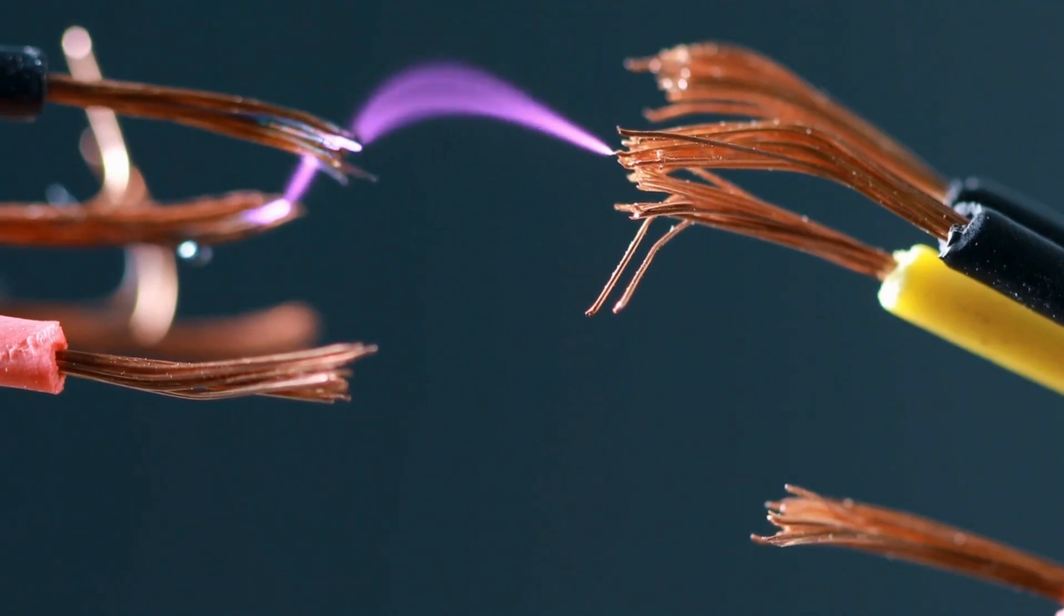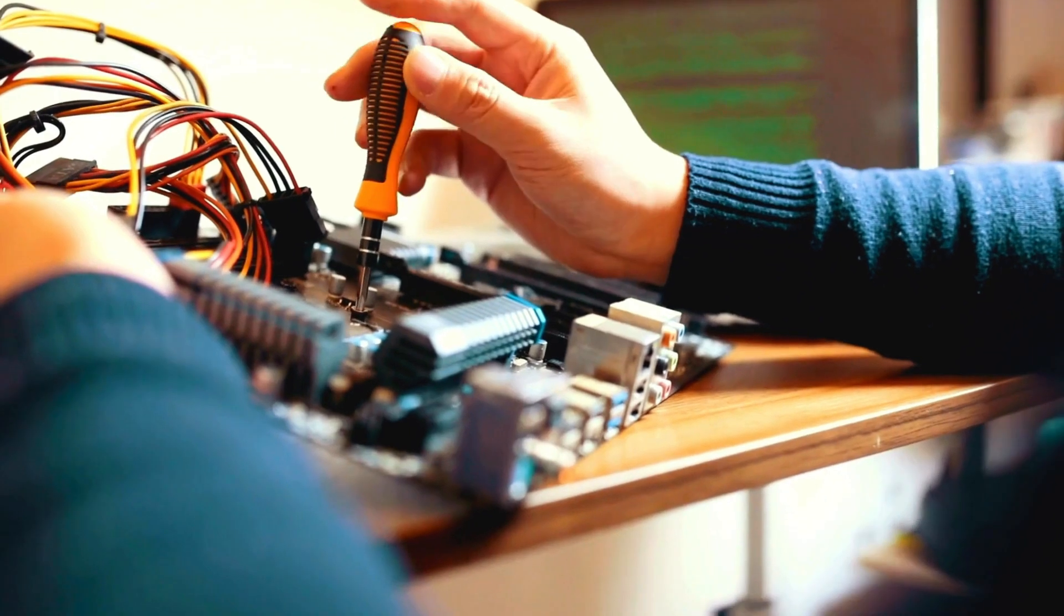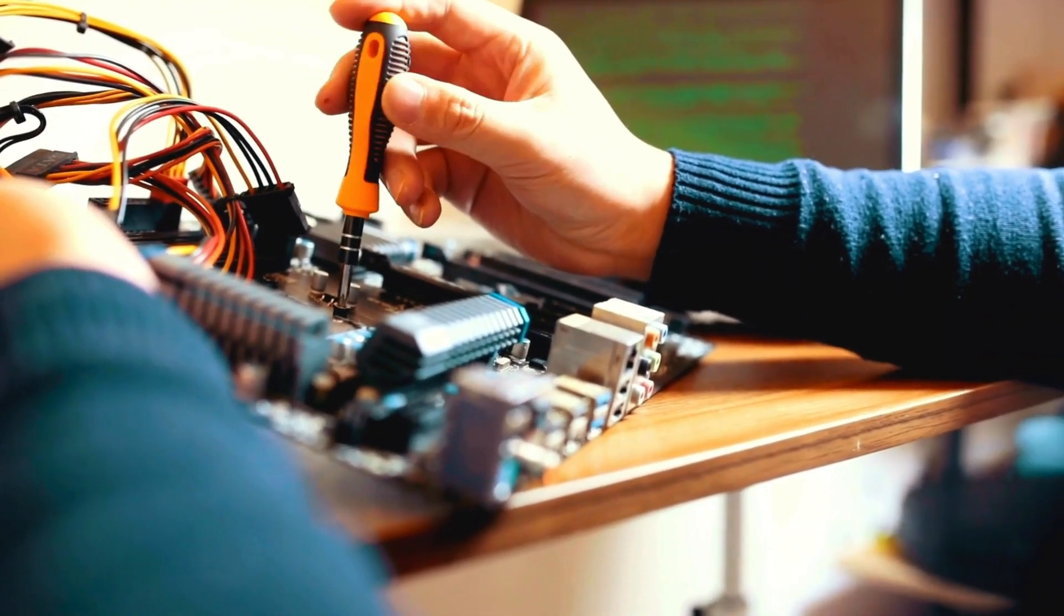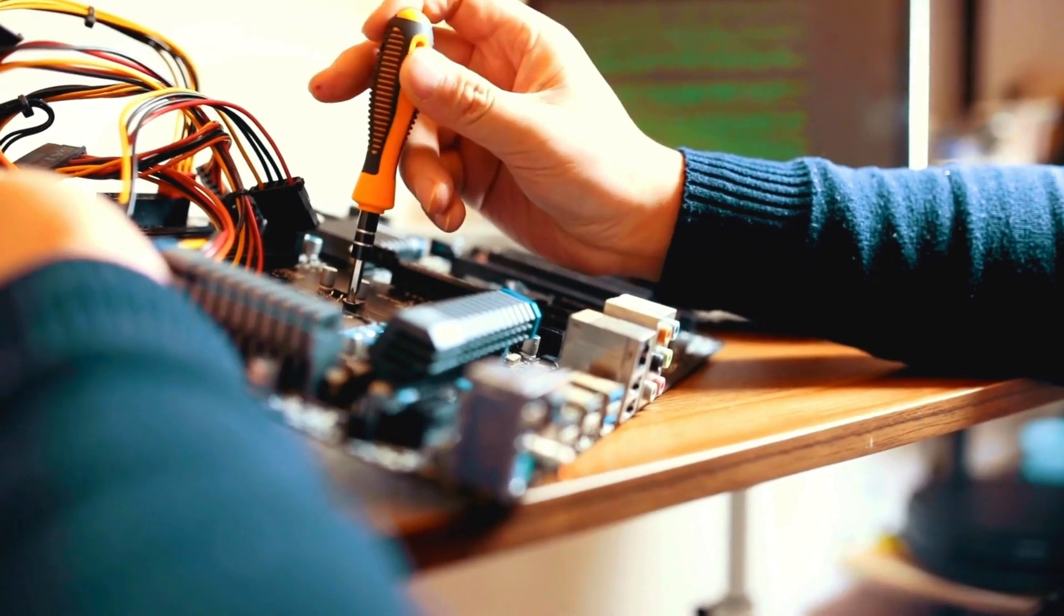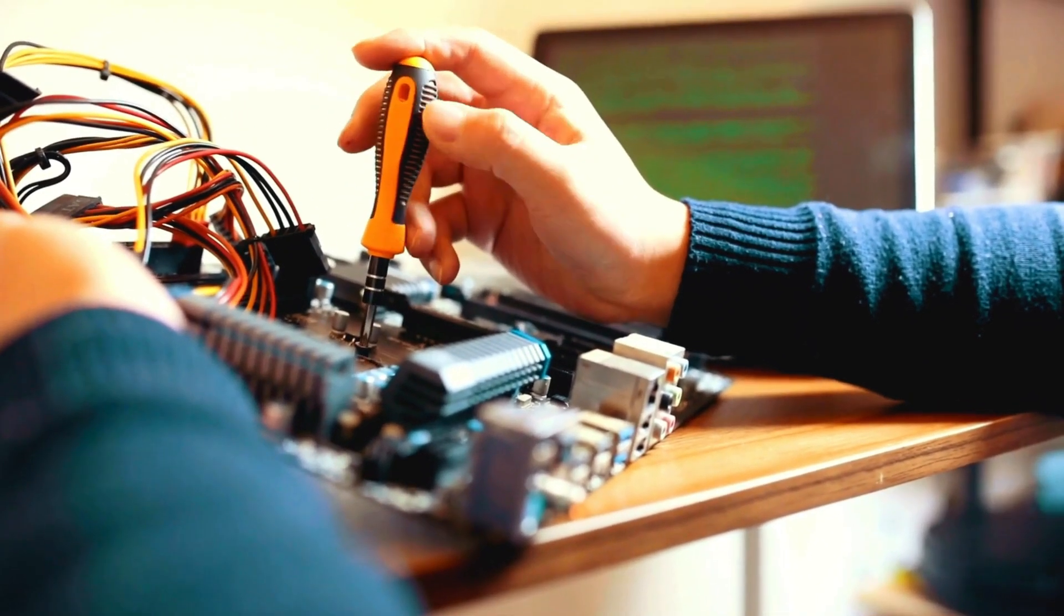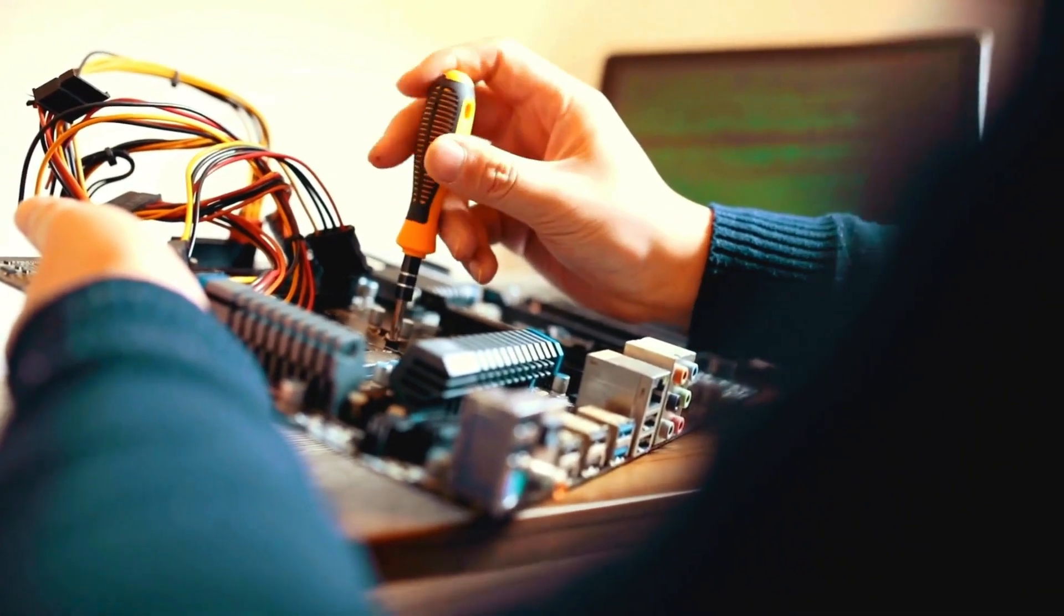Have you ever felt a jolt of confusion when learning about electricity? Hey guys, in this video we're tackling one of the most perplexing topics in electrical engineering – the battle between conventional current and electron flow. Stay with us until the end, and you'll uncover the hidden truths that could revolutionize your understanding of circuits and how they work.